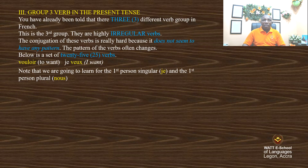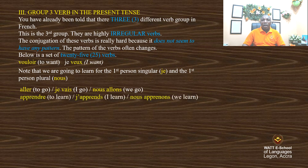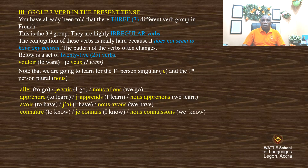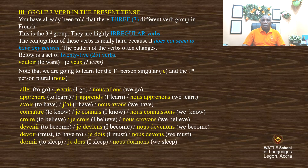We are going to learn the first person singular and the first person plural — je and nous. Note that aller, that is 'to go': je vais, nous allons. Apprendre: j'apprends, nous apprenons. Avoir, 'to have': j'ai, nous avons.